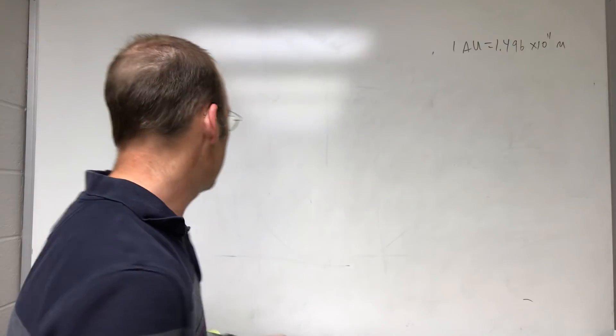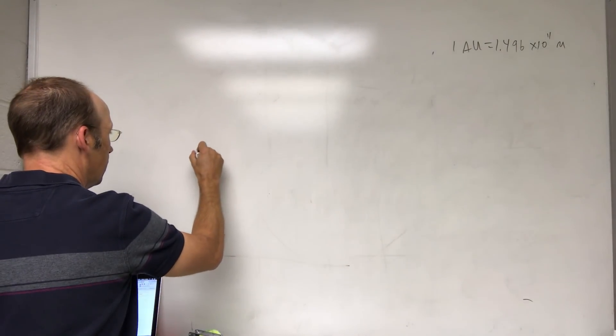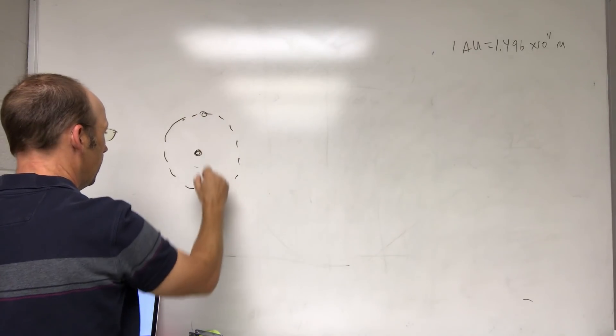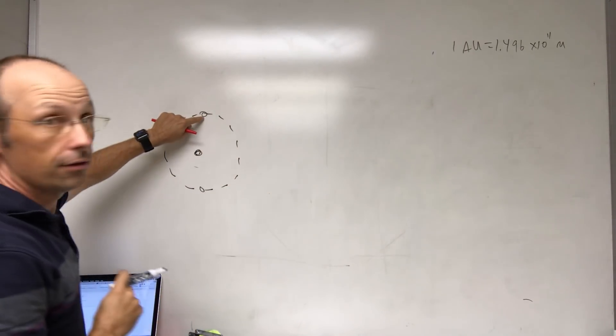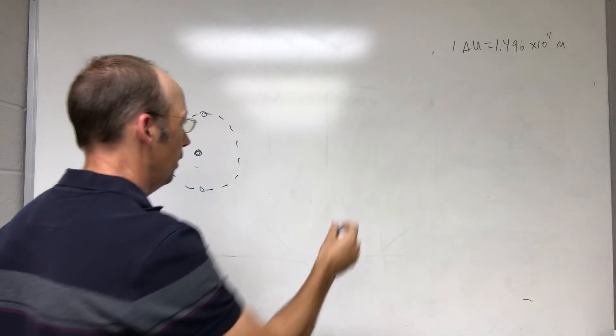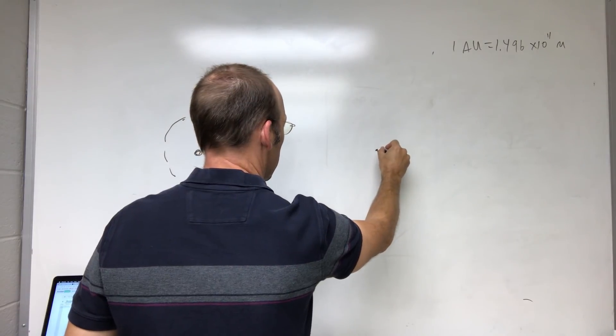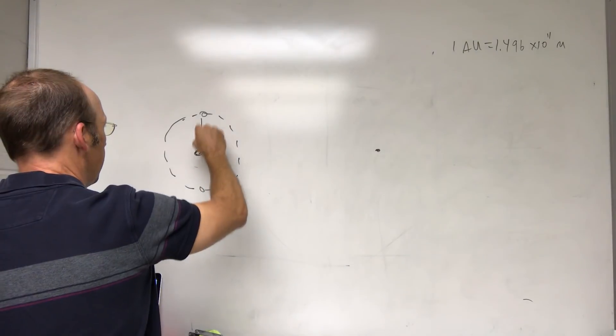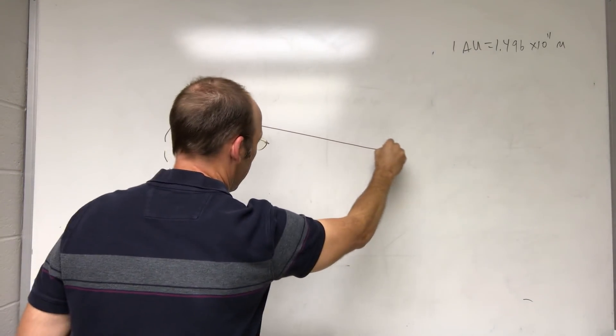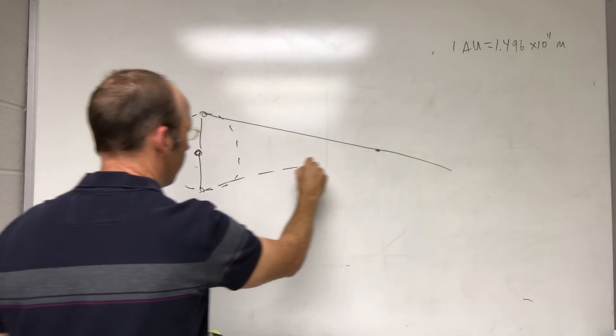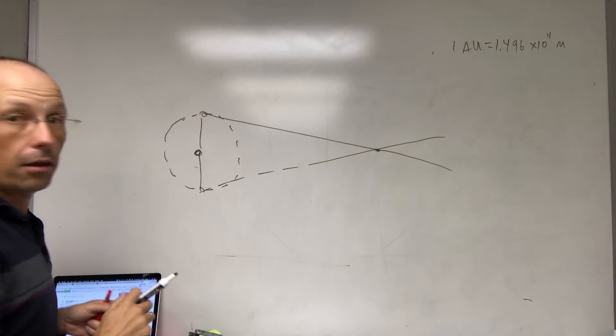Okay, so let me draw a not-to-scale picture. Here's the sun. Here's the earth orbiting. And so here it is in January and six months later in June. And then here's a star that's close by, very close. And you see here that it looks like it's there with respect to the background stars. And then later it looks like it's there with respect to the background stars.